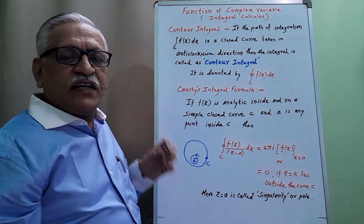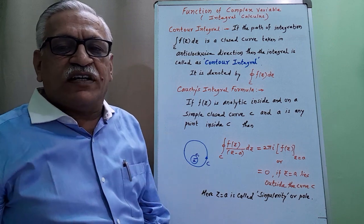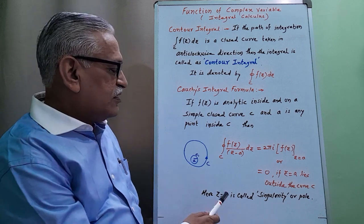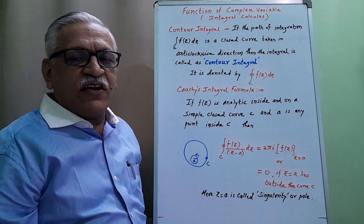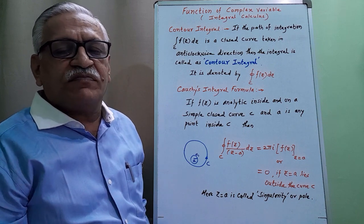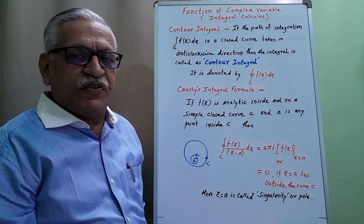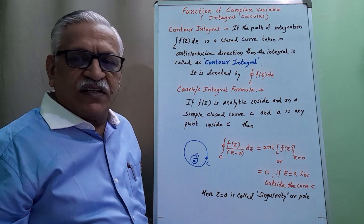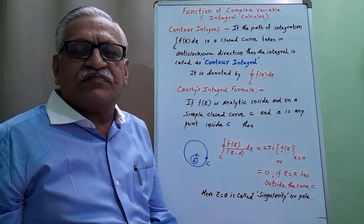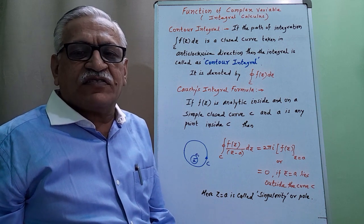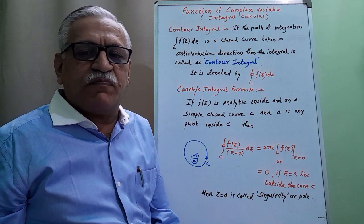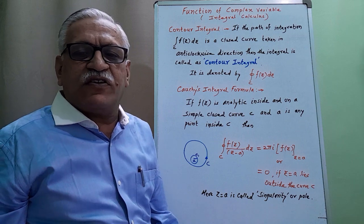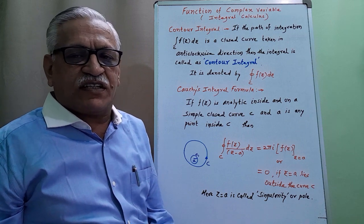Here z = a is called a singularity or the pole. I have defined this term in my previous video — refer that video. Then I will discuss some simple problems based on this contour integral, how we can evaluate that contour integral.